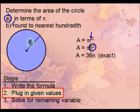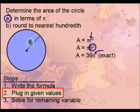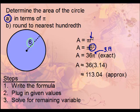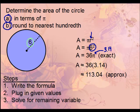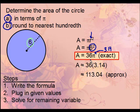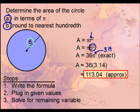For part b, we round to the nearest hundredth. We substitute pi with its decimal equivalent 3.14, giving us 36 times 3.14, which equals 113.04. So 36π is the exact answer, while 113.04 is the approximation — both are correct.